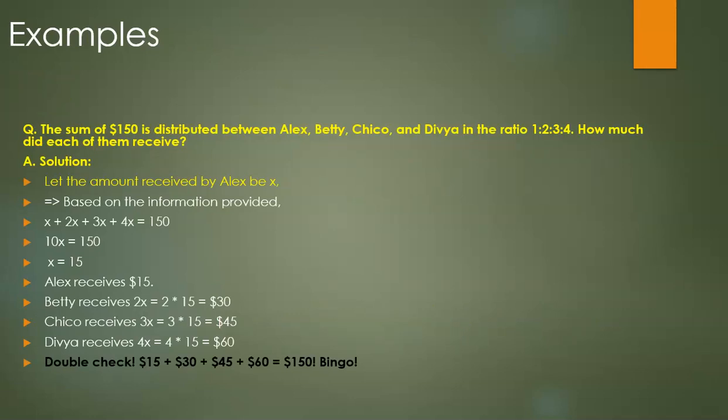Here we have a sum of $150 which is distributed between four individuals: Alex, Betty, Chico, and Divya. It's divided between them in the ratio 1:2:3:4, and we are supposed to find out how much did each of them receive.